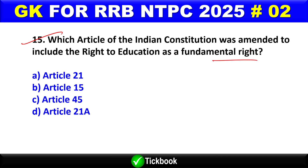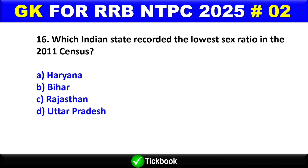Question number 15: Which article of the Indian Constitution was amended to include the Right to Education as a fundamental right? Option D is the right answer — Article 21A.